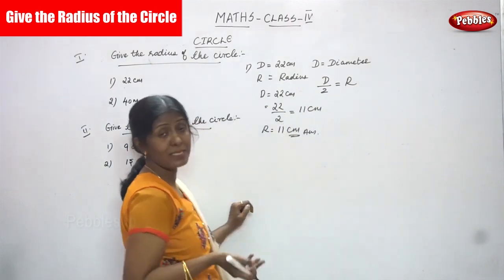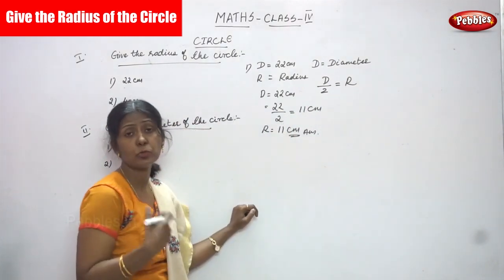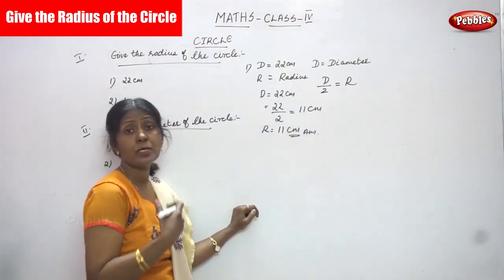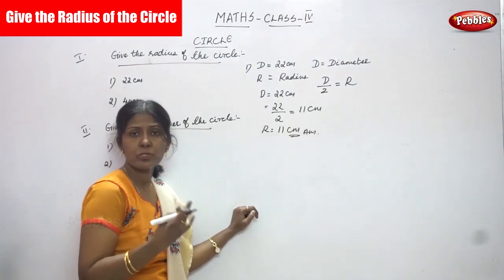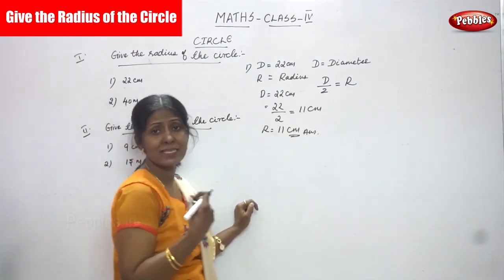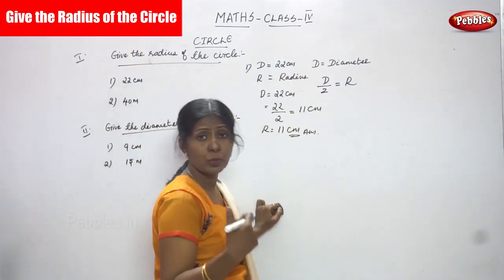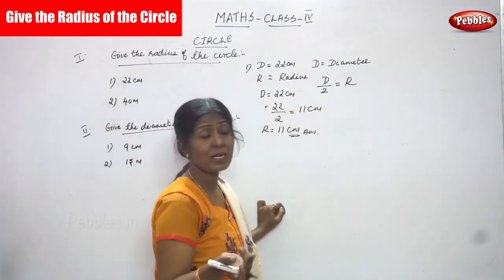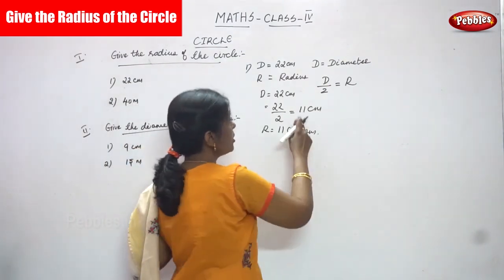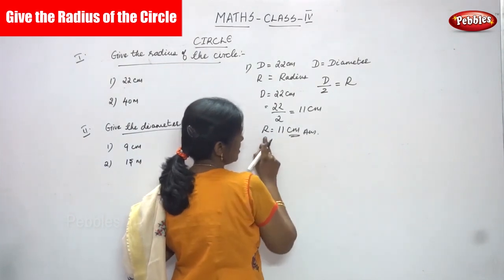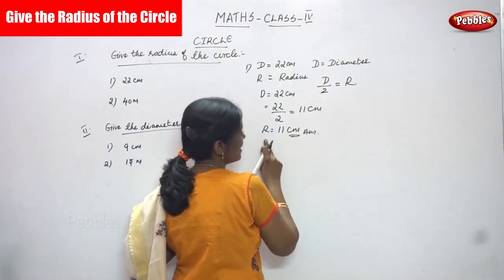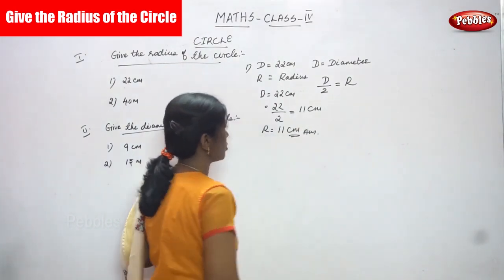You must say the 2 times tables: 2 ones are 2, 2 twos are 4, 2 threes are 6, 10 twos are 20, and added 2 is 22. So, the answer is 11 cm. R is equal to 11 cm.